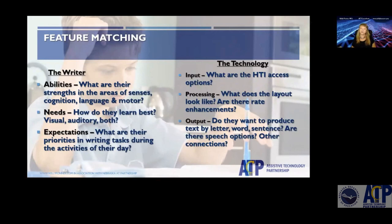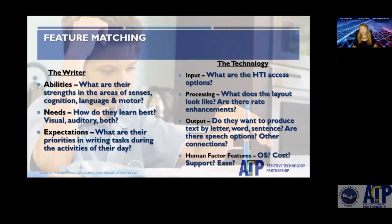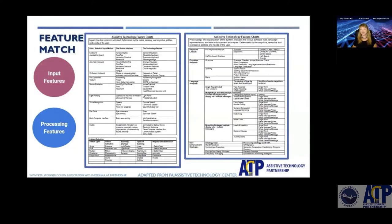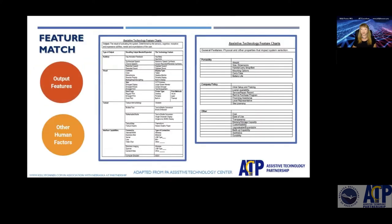What do they need to produce? Do they need letter-by-letter writing, whole word writing, or sentences? What are the different formats we produce writing in — letters, notes, print, drawings? And of course, what are the human factors? We've given you access to more robust feature match forms that you can look at in each of these four areas.